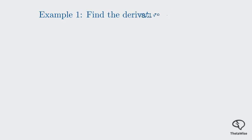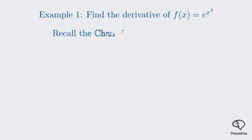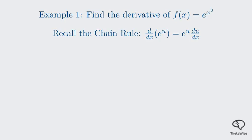Here's our first example. Suppose you need to find the derivative of the function f(x) = e to the power of x cubed. We know the basic rule for the derivative of e^u is e^u times the derivative of u — that's the chain rule. The derivative with respect to x of e^u is e^u times du/dx. So we can recognize that our function, e^(x³), fits this pattern.